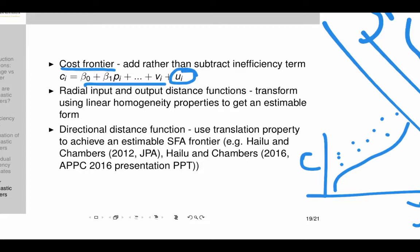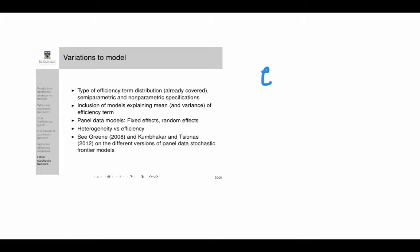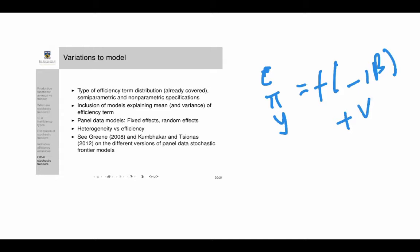Other frontier forms include input and output distance functions, which will be covered later in the course. These are obtained by using their linear homogeneity properties to transform them into SFA-type models. Directional distance functions can also be translated into stochastic frontier analysis using their translation property, as shown for example in Hudgins and Chambers in a JPA paper. So the basic SFA model covers cost, profit, and production functions, with noise and inefficiency terms added or subtracted depending on the function type.